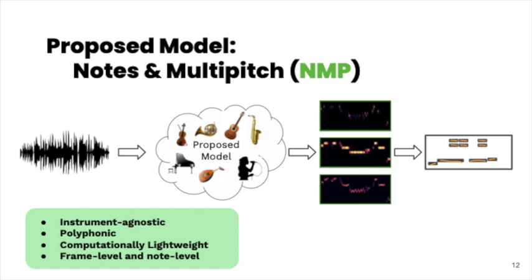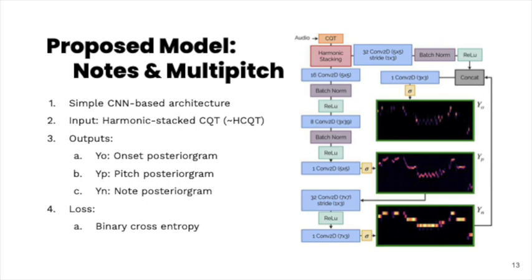In this work, we propose an instrument-agnostic AMT system which supports polyphonic audio, both frame and note-level estimates, and is computationally lightweight. The proposed system, Notes and Multi-Pitch or NMP, consists of a neural network that outputs three posteriograms, which are then post-processed to create note events or multi-pitch estimates. The input to the neural network is a CQT, followed by a harmonic stacking layer, which was chosen to reduce the model size.